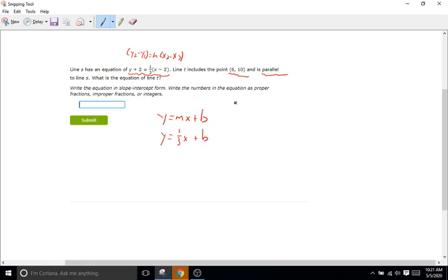Just like last time, we are then going to plug our point in. So we have 10 equals 1/3 times 6 and then plus b. So then we have 10 equals 1/3 times 6 or just 6 divided by 3 is 2 plus b. To get b by itself, we subtract 2 from both sides. 10 minus 2 is 8, which equals b. So b equals 8.